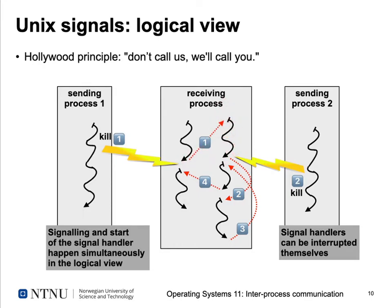A signal handler can itself be interrupted if a second process sends another signal while the first handler is still executing. In that case, execution switches to the new signal handler. When that second handler finishes, execution returns to the first handler, and only after that does the original program execution resume.